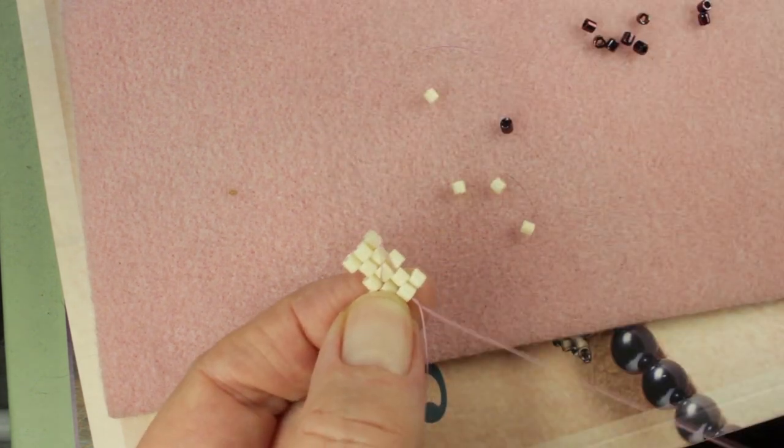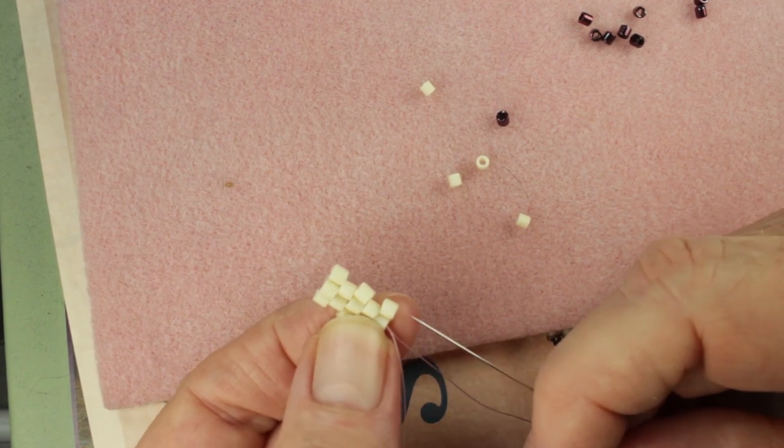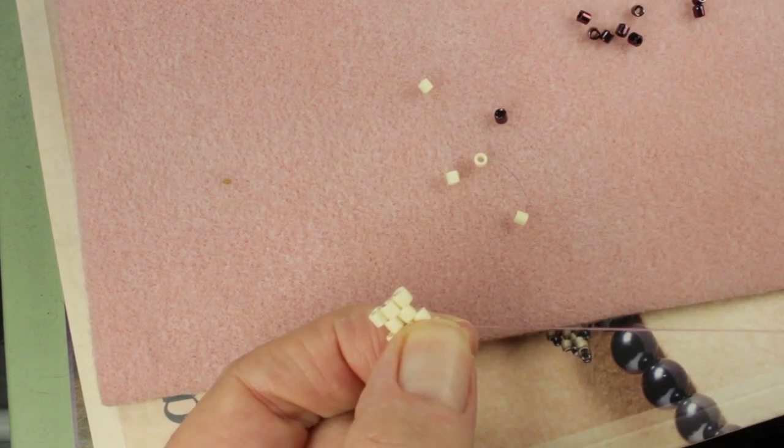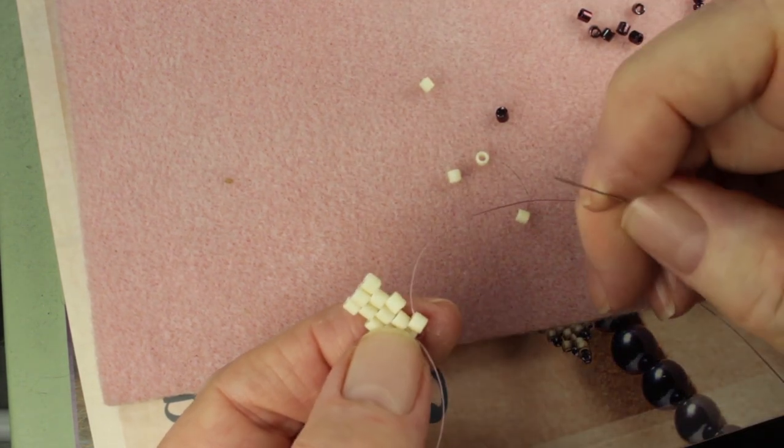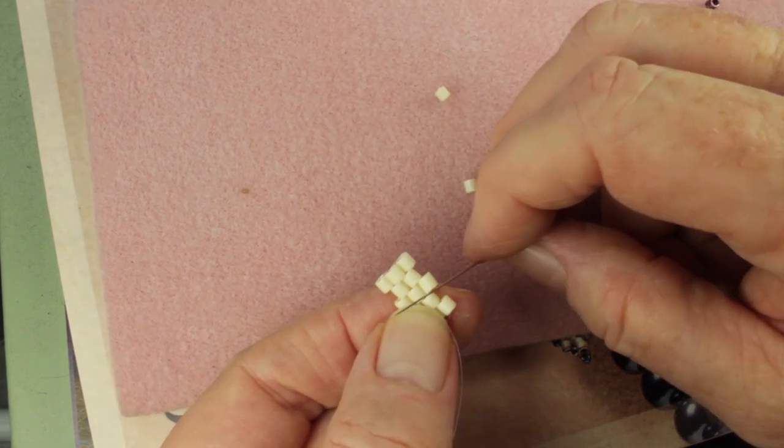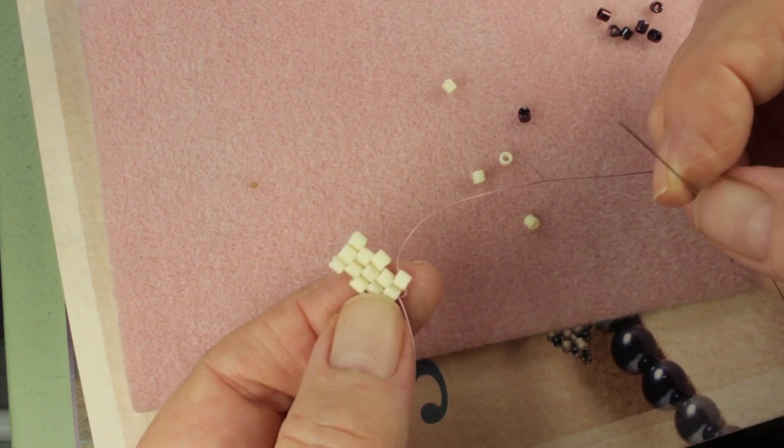Then we make one more u-turn, and we're going in the right direction now to continue across the row. Do our two stitches, turn, and come back. You just do that at the same side all the time.